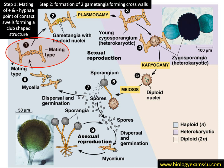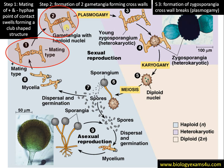You can see the nuclei shown in red color are of the plus strain, and those in blue are of the minus strain. A cross wall is formed creating two gametangia — one of the plus strain and the other of the minus strain. Step three is the formation of zygosporangia as the cross wall breaks and the nuclei come together.